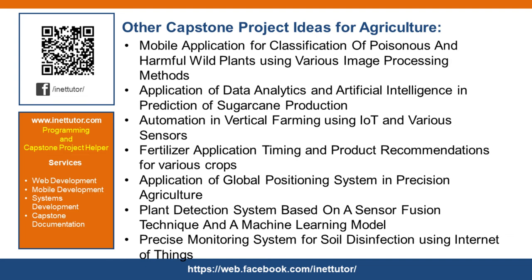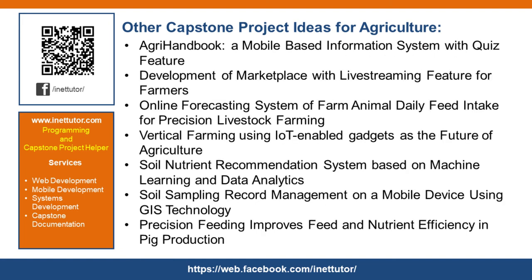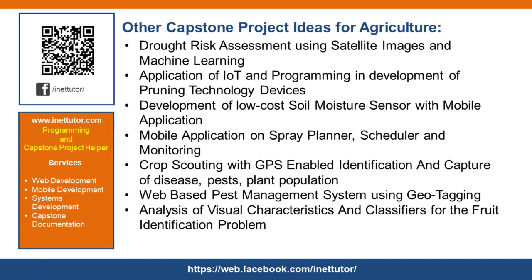Application of global positioning system in precision agriculture. Plant detection system based on a sensor fusion technique and a machine learning model. Precise monitoring system for soil disinfection using Internet of Things. Agri Handbook, a mobile-based information system with quiz feature. Development of marketplace with live streaming feature for farmers. Online forecasting system of farm animal daily feed intake for precision livestock farming. Vertical farming using IoT-enabled gadgets as the future of agriculture. Soil nutrient recommendation system based on machine learning and data analytics. Soil sampling record management on a mobile device using GIS technology. Precision feeding improves feed and nutrient efficiency in pig production. Drought risk assessment using satellite images and machine learning.